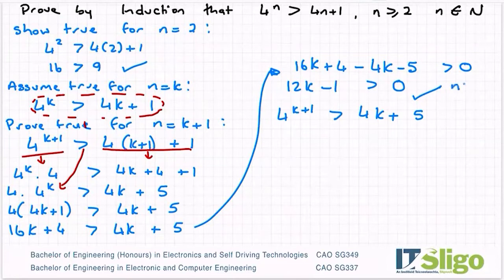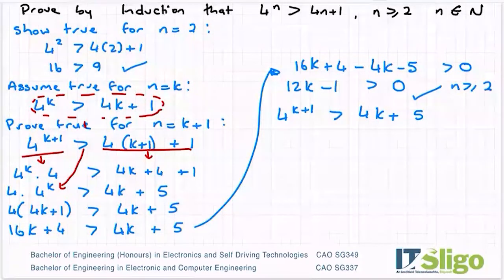And I might just put in the starting condition there for that one because it wasn't true when n equals 1. Therefore, p of k plus 1 holds true.